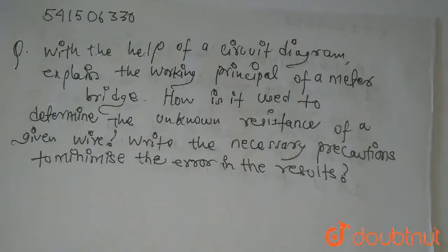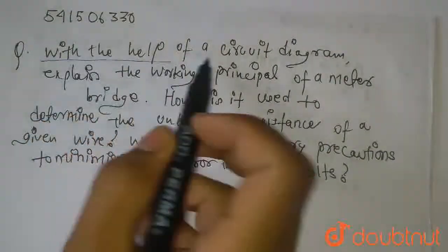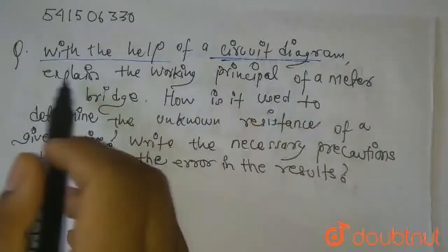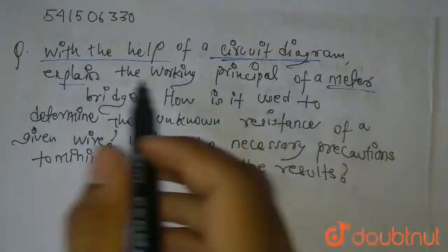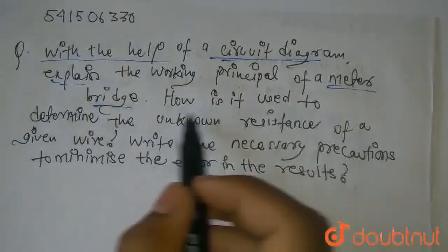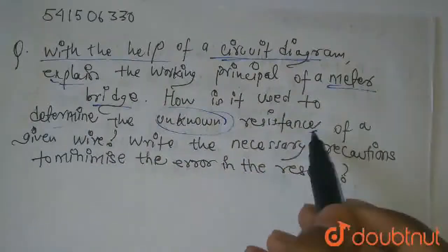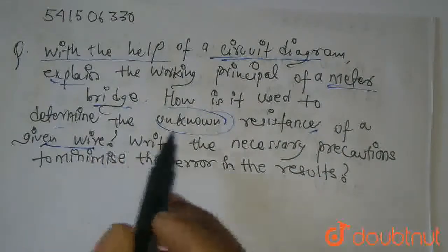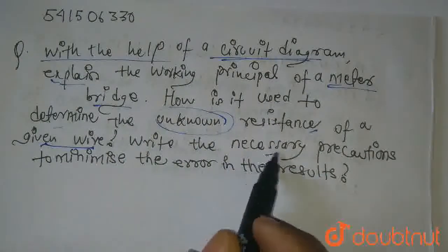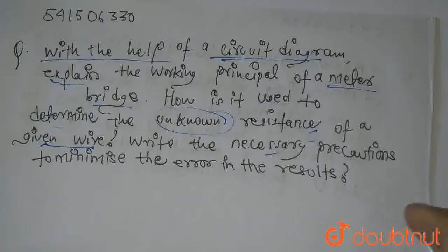Hello everyone. In this question, with the help of a circuit diagram, I will explain the working principle of a metre bridge, how it is used to determine unknown resistance of a given wire, and write the necessary precautions to minimize the error in the results.